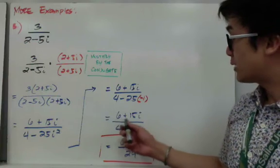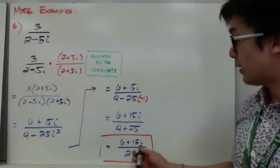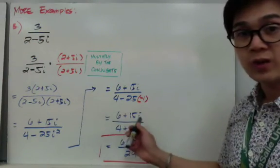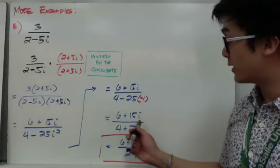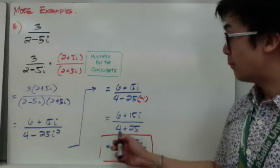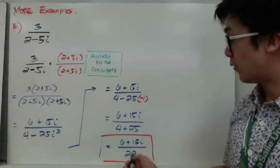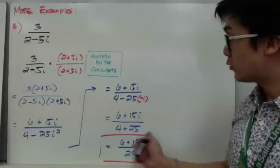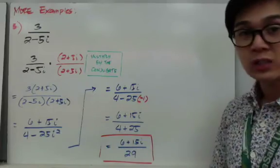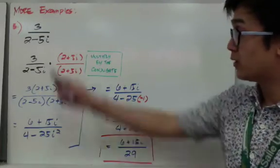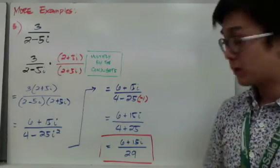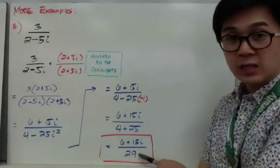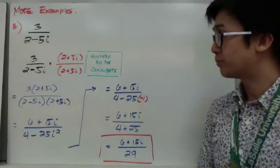So we have 6 plus 15i in the numerator — we just copy it since it's already in standard form. Combining 4 and 25 gives us 29. This is our rationalized rational expression for example number 3: 6 plus 15i all over 29, with no more imaginary number in the denominator.